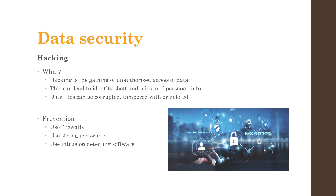There are many different ways people could get a hold of our data. The first example is hacking. Hacking is the act of gaining unauthorized access to a computer system, which can then lead to identity theft or misuse of information. The data can also be deleted, changed, or corrupted. There are measures we can take to prevent this: we can use firewalls, strong passwords, and intrusion-detecting software, among many others.